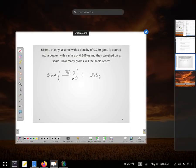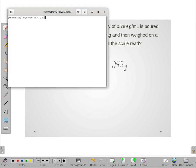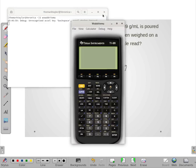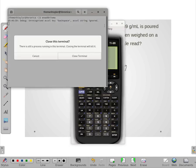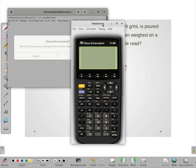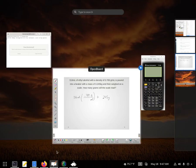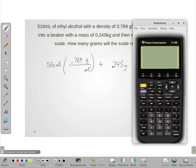And I forgot to fire up my calculator. That's the wrong calculator, but it'll work. So 516 times 0.789 gives me this. And then I add that to 245. And I should just have the three significant figures. So my answer is 652 grams.